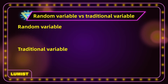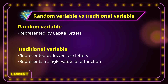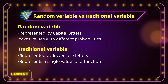This begs the question: what exactly is the difference between random variables and traditional variables, or algebraic variables as we called them in high school? Well, to begin with, they are visually different. Visually, a random variable is denoted by a capital letter, whereas a traditional variable is in lowercase. More deeply, a traditional variable typically represents a single value or a function. Even when it represents a function, we know that there is a value to be found — the variable has a solution. But random variables are different. A random variable takes values with different probabilities. It makes no sense to talk about a random variable without probabilities.